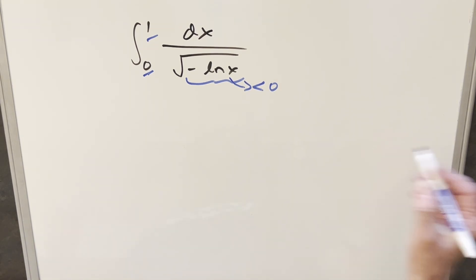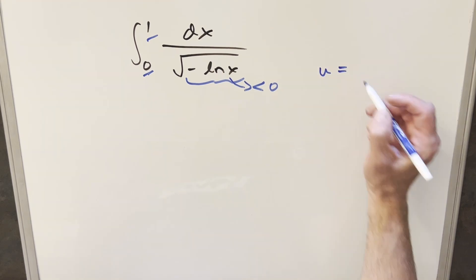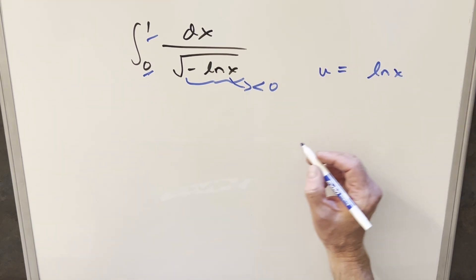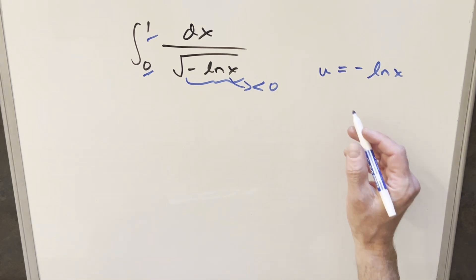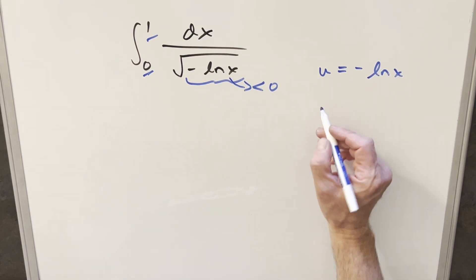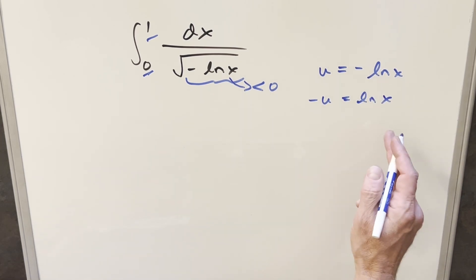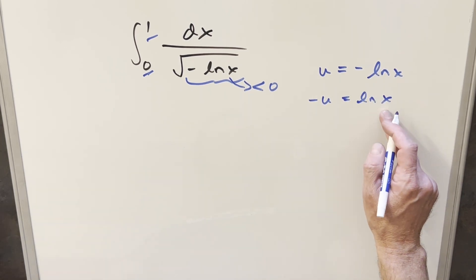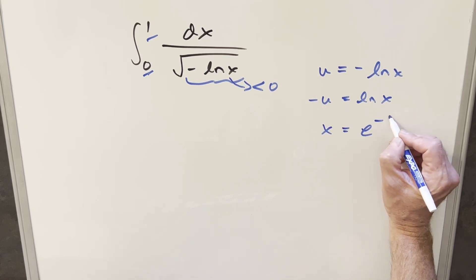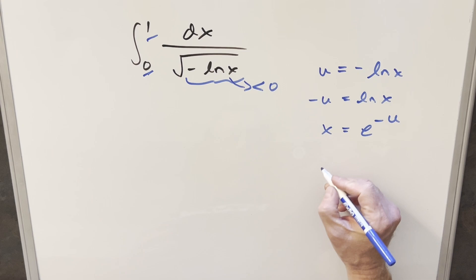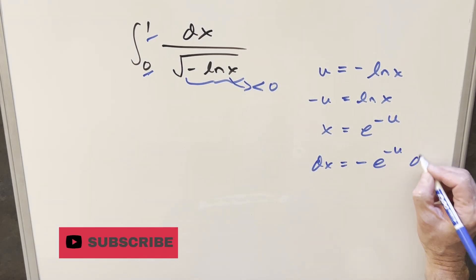To get started, let's do a u-substitution to clean this up. You could do u equals natural log x, but what I actually want to do is u equals minus ln x. Rearranging to get a value for x: minus u equals ln x. Isolating x with log properties, we get x equals e to the minus u. Taking the derivative, dx equals minus e to the minus u du.